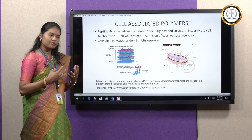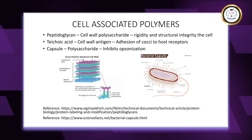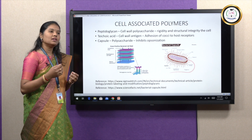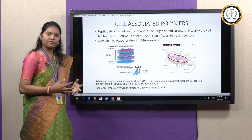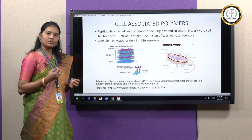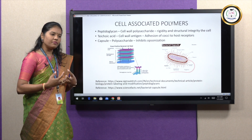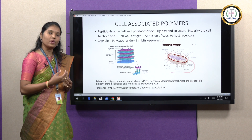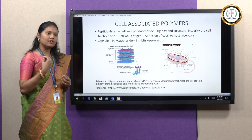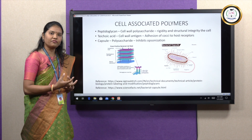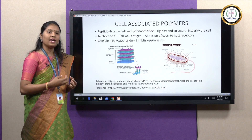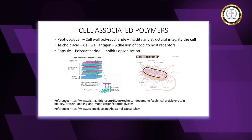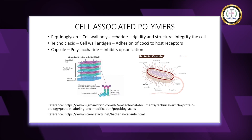Teichoic acid is a cell wall antigen and an important component of the gram-positive cell wall. It prevents the bacterium from complement-mediated opsonization. Opsonization is a process in which substances called opsonins tag foreign antigens and make them available for phagocytosis. Phagocytosis is cell engulfing — macrophages have special affinity towards foreign antigens tagged by opsonins. Macrophages engulf these foreign antigens, disintegrate them inside the phagolysosome, and release waste products. Teichoic acid prevents bacteria from this type of phagocytosis and opsonization.